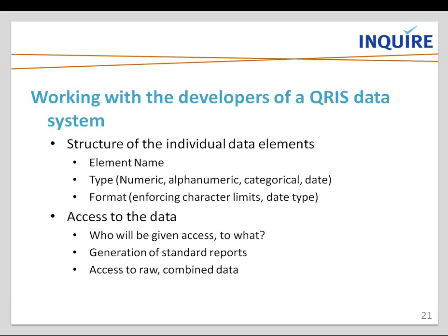As you review these data elements, you're going to want to think about who will be able to access that information at what level. For example, there may be child-level information that should only be accessed at an aggregate level and never at a child level. Access to the data also includes thinking about the ability of staff to view, add, edit, or delete information from your system, which goes a lot to your data quality.